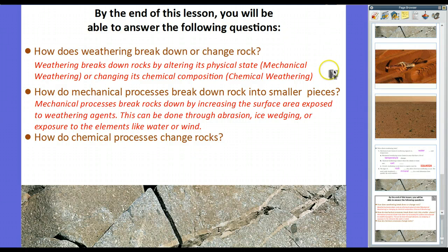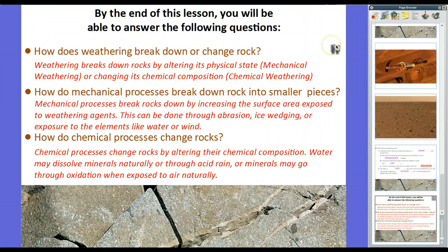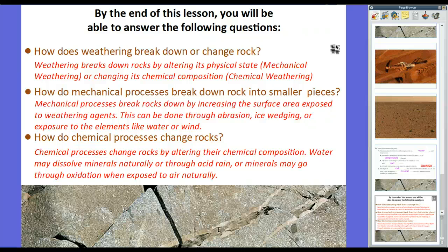Now, how do chemical processes change rocks? Well, chemical processes change rocks by altering their chemical composition. Water may dissolve minerals naturally, because water is a natural acid. In addition, most minerals will dissolve in water eventually. However, acid rain is mainly through an industrial by-product, is a lower pH rainwater. And as a result, it will dissolve rocks and soil more quickly. Or, minerals may go through oxidation when exposed to air naturally. And the outside of a mineral will be oxidized. So you'll have a combination of oxygen and that element, whereas the inside stays unchanged.